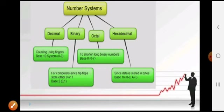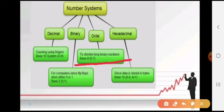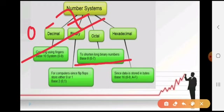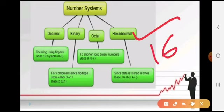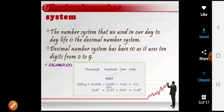Octal number system: agar koi binary number system bahut long hai, to us tarah se usko hum short mein convert kar sakte hain to the form of octal number. Ismein jo numbers include hote hain woh hote hain 0 se lekar 7 tak ke. Hexadecimal number system ka base 16 hota hai — 0 se lekar 9 tak ke digits aur saath hi A se lekar F tak ki alphabets — in dono se milkar humara hexadecimal number system banta hai, total 16 numbers, isliye base 16 hai.